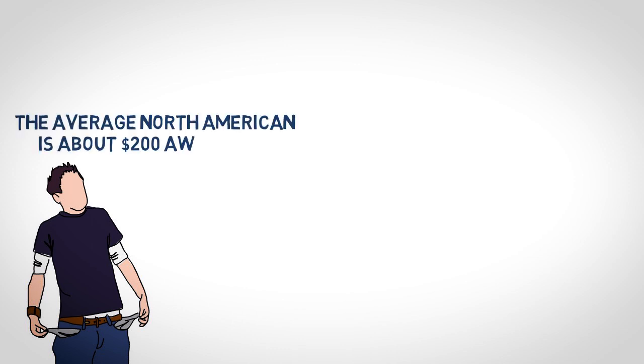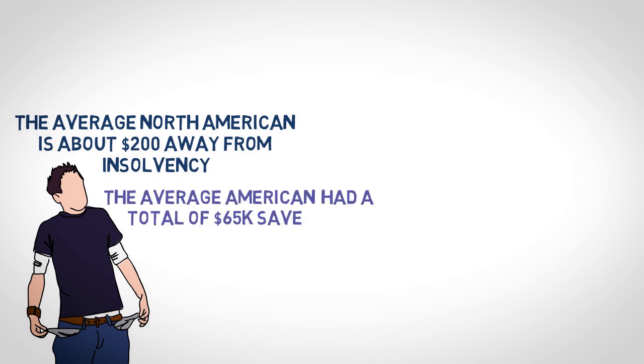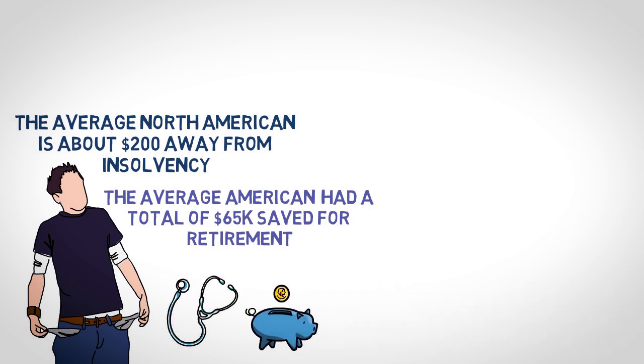The average North American is about $200 away from insolvency. In 2019, the average American had a total of $65,000 saved for retirement. And let's face it, with medical and living expenses, any money saved won't last very long.